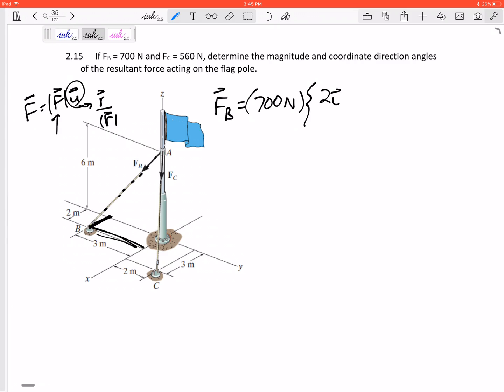If I did 2 squared plus 3 squared plus 6 squared and took the square root of that, I would actually get 7 - works out pretty nicely. Then I can multiply this through and I would get 200 in the I minus 300 in the J minus 600 in the K, units are Newtons.